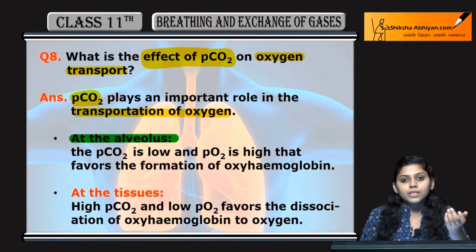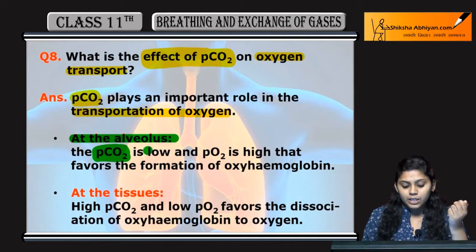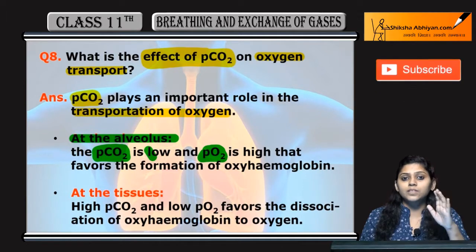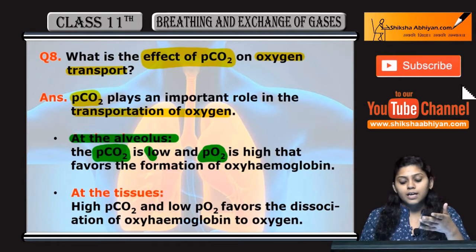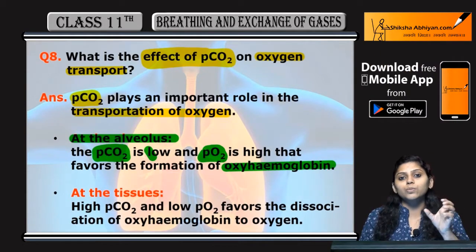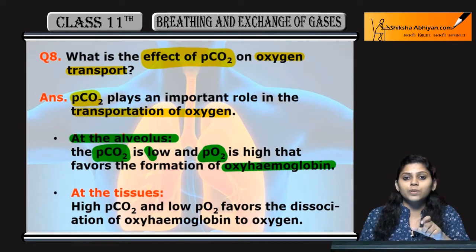In the alveolus, PCO2 (partial pressure of carbon dioxide) is low as compared to the partial pressure of oxygen. Because CO2 is low and O2 is high, the formation of oxyhemoglobin is favorable — meaning oxyhemoglobin is formed, and oxygen attaches to hemoglobin.